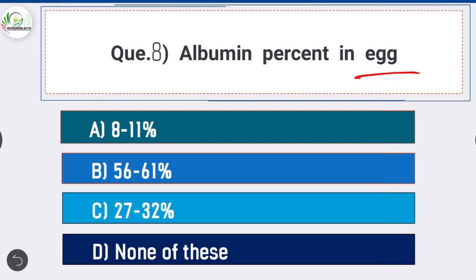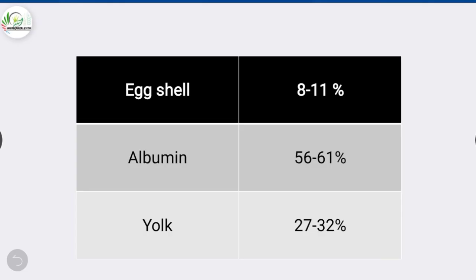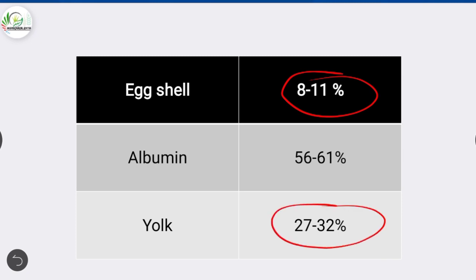The albumin percent in egg is 56 to 61 percent. Eggshell constitutes 8 to 11 percent, and yolk constitutes 27 to 32 percent of the egg.